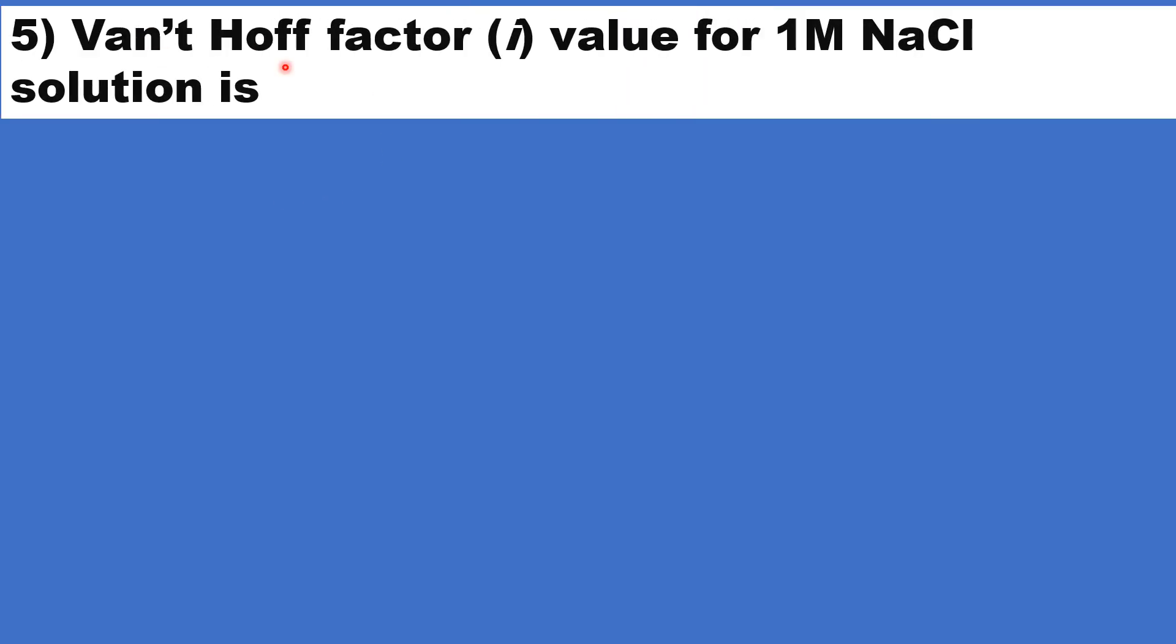Let us see the fifth question. Van't Hoff factor i, it is represented by i, value for 1 molar sodium chloride solution is 2. Because it is completely dissociated to give 1 mole of Na+ ion, 1 mole of Cl- ion. Therefore, i equal to 2.